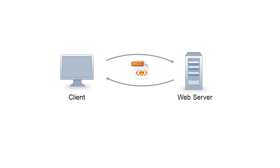WSDL is an XML format for describing network services as a set of endpoints operating on messages containing either document-oriented or procedure-oriented information. The operations and messages are described abstractly and then bound to a concrete network protocol and message format to define an endpoint.